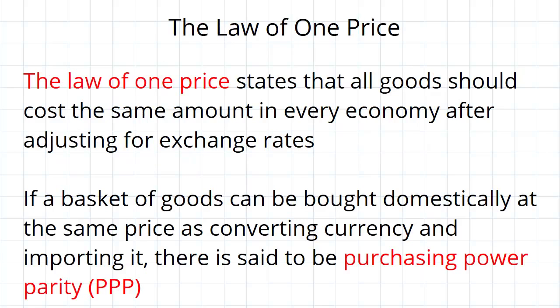The law of one price says that all goods should cost the same amount in every economy after you've adjusted for exchange rates. In other words, if you buy a good domestically, it should cost you the same amount as if you exchanged your domestic currency for some foreign currency and bought the good using the foreign currency in a different economy. And that should apply for every possible economy, whether you want to buy it from France or Denmark or Algeria or wherever you could possibly buy it from.